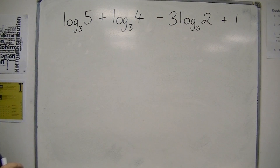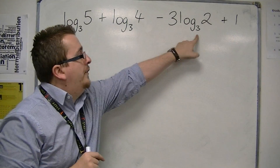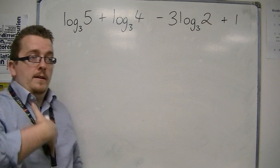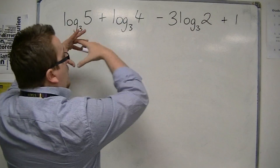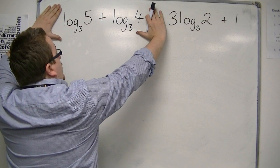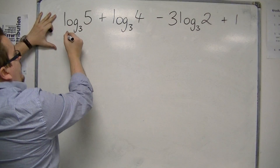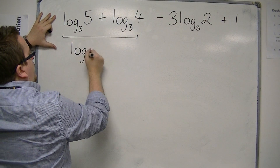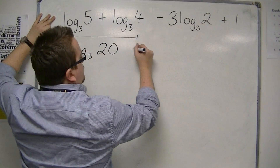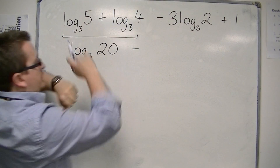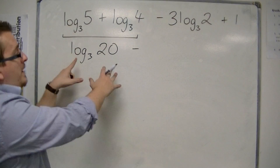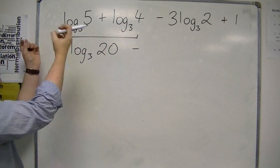The first thing you may be noticing is that they all have the same base — log base 3 — which allows me, piece by piece, to bring them together. If I just look at log base 3 of 5 plus log base 3 of 4, that's the same as log base 3 of 5 times 4, so log base 3 of 20. So I can accumulate those two together.